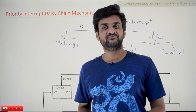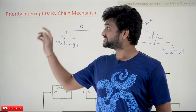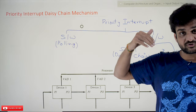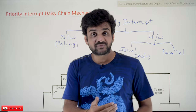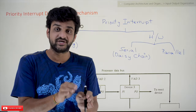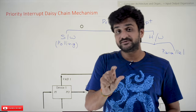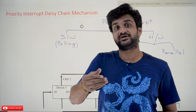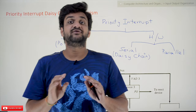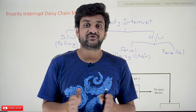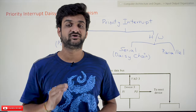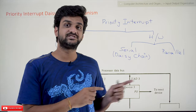Hi, welcome to Learning Monkey. I'm Vikram. In this class we'll try to understand the Daisy Chain mechanism. The concept of priority interrupt has already been explained in our previous video — if you haven't watched that, please watch it first. Every video in our channel is part of an entire course or playlist, and our suggestion is to follow the entire course for better understanding. The link for the playlist is provided in the description below.